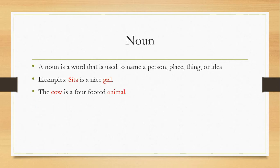First let us see what is noun. A noun is a word that is used to name a person, place, thing, or idea. We can say noun is a naming word. Example: Sita is a nice girl. The cow is a four-footed animal. Sita and girl, they are nouns. Cow, animal, they are also nouns.